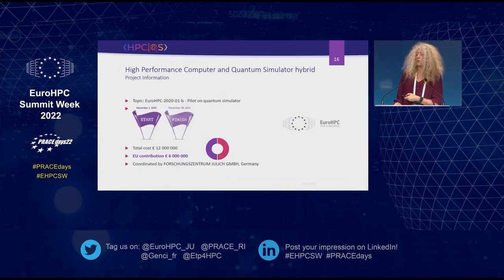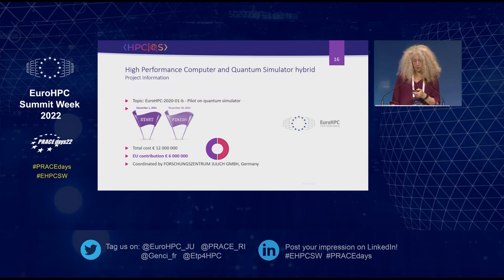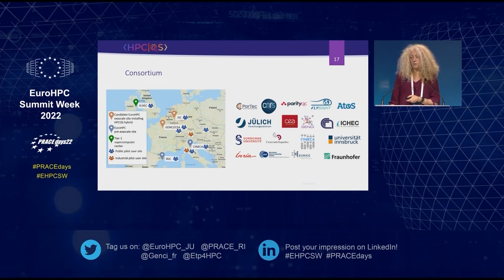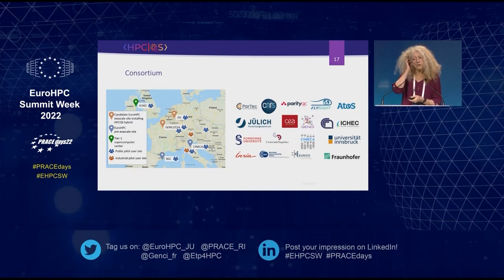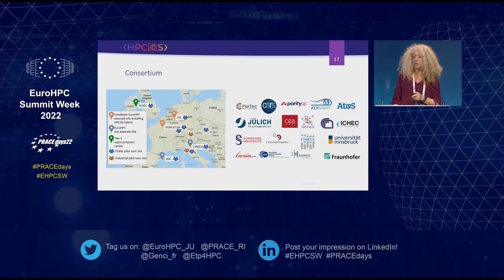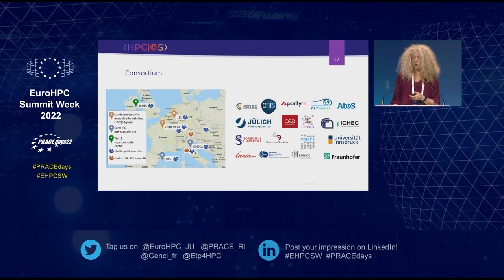A few data about the project: it started 1 December last year and is a four-year project with a total budget of 12 million euros. The consortium includes several HPC centers: CEA–GENCI for the implementation and integration of one quantum simulator, one integrated in JÜLICH with a twin system, the Barcelona Supercomputing Center, Cineca, and iCHEC in Ireland, along with partners from academia and industry.